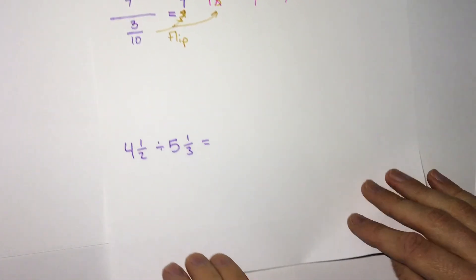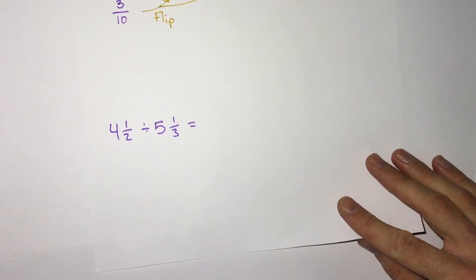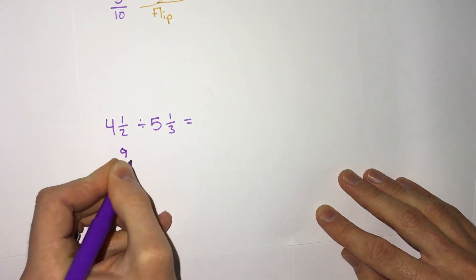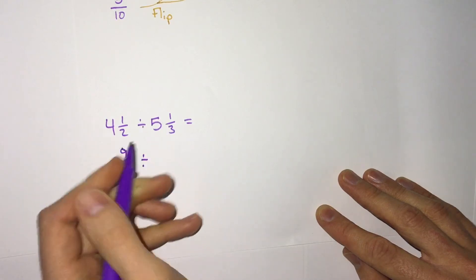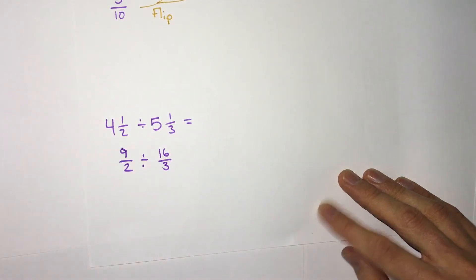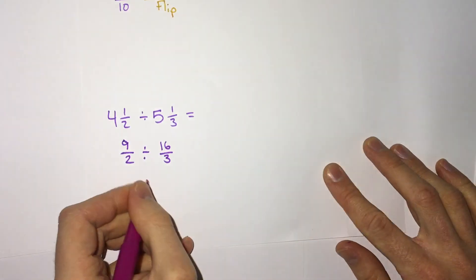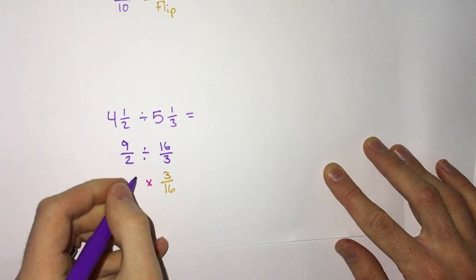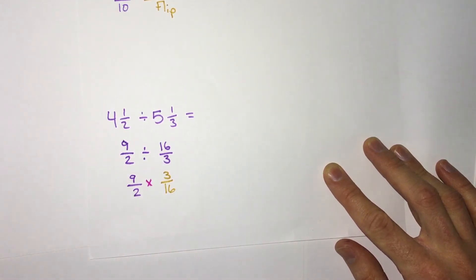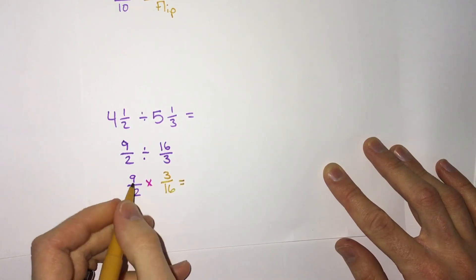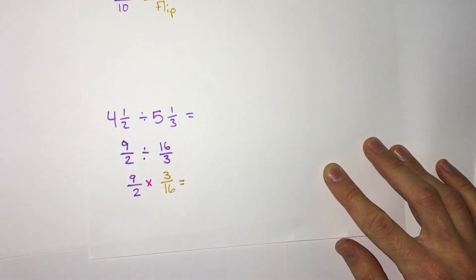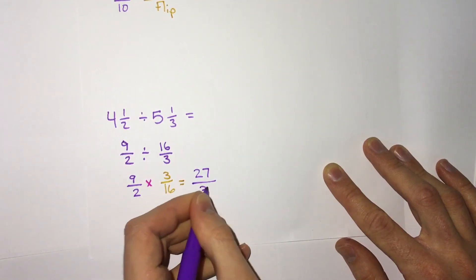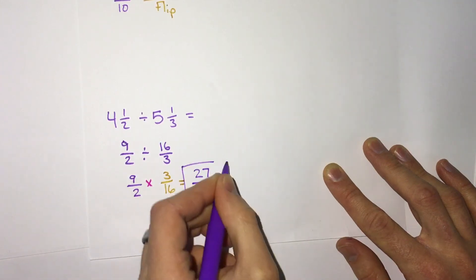One more example: 4 and a half divided by 5 and a third. Just like multiplication, we have to change them first to improper fractions. 4 and a half: 4 times 2 is 8, plus 1, we get 9 halves. 5 and a third: we get 16 thirds. Now it's improper fractions, but we still have to do the change and flip — change to multiplication and flip the second fraction. So we get 9 halves times 3 sixteenths. 9 and 16 share nothing, 3 and 2 share nothing, so we multiply: 9 times 3 is 27, 2 times 16 is 32. 27 over 32 is our simplified answer.